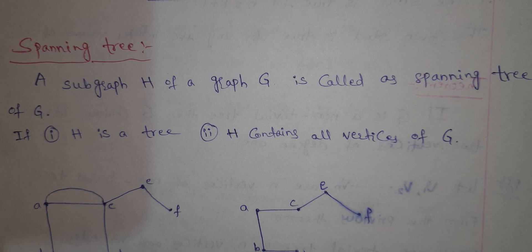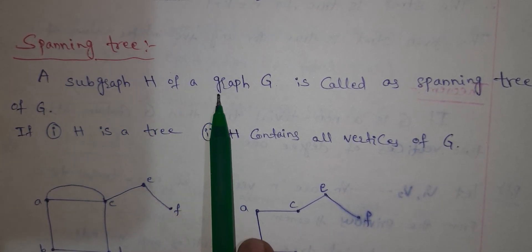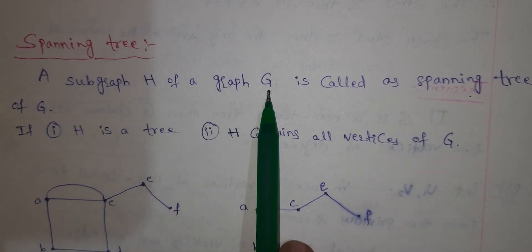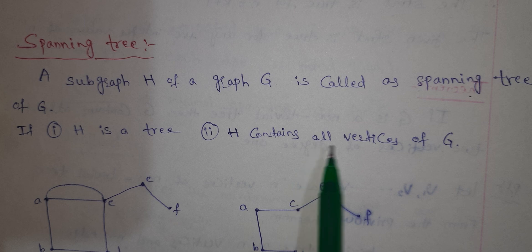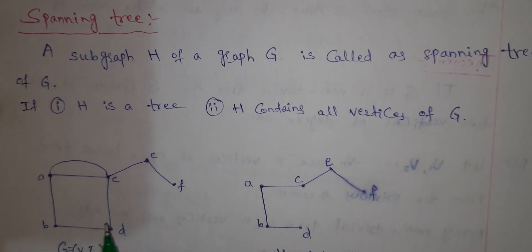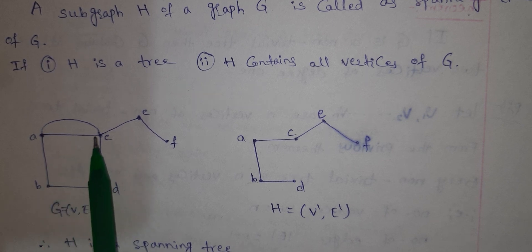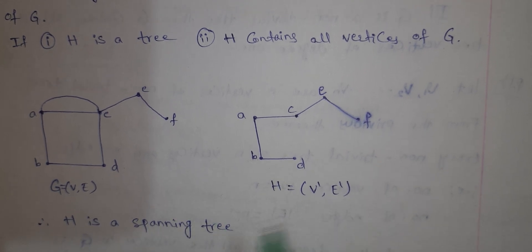First, we will see the problem. This is the definition. A subgraph H of a graph G is called a Spanning Tree of G if: Roman No. 1 — H is a tree, and Roman No. 2 — H contains all the vertices of G. Here is a graph G, and this graph is called a tree. So H is a Spanning Tree.